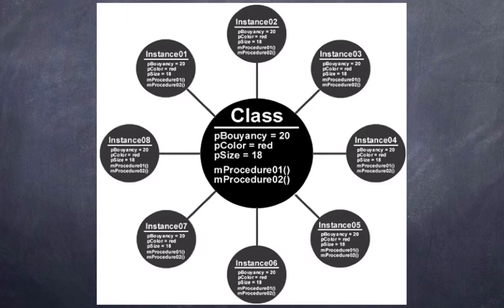The core foundation is the class. A class is simply a blueprint of something. For example, we can have a blueprint of a house and we can create many houses from that same blueprint. You can see we have objects that follow this class blueprint and they're called instance 1, 2, 3, 4, 5, 6, 7, 8. The class has several properties like its buoyancy is 20, its color is red and its size is 18, as well as two methods.